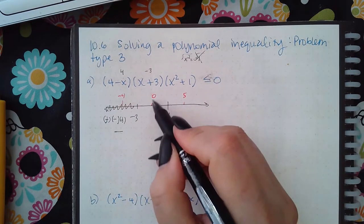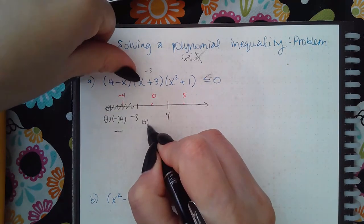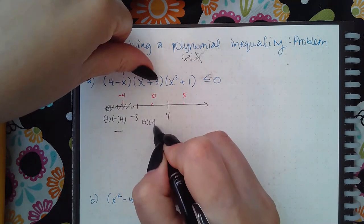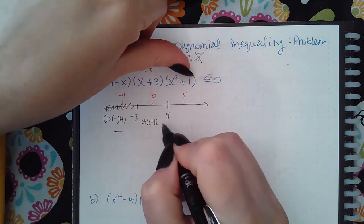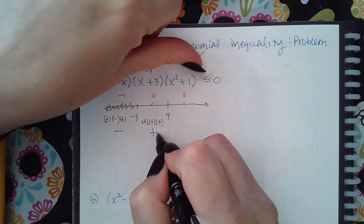If I test 0, 4 minus 0 is positive, 0 plus 3 is positive, 0 squared is still 0 plus 1 is positive. So I end up with the positive. Positives are not less than or equal to 0.